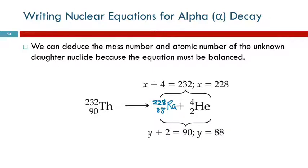The top number is the mass number, not the atomic mass. Atomic mass is the average mass of all the atoms of that element including all the different isotopes. Here we're looking at an individual isotope with a particular number of neutrons. There are other isotopes of radium, but this particular isotope of thorium-232, when it undergoes alpha decay, makes this particular isotope of radium.